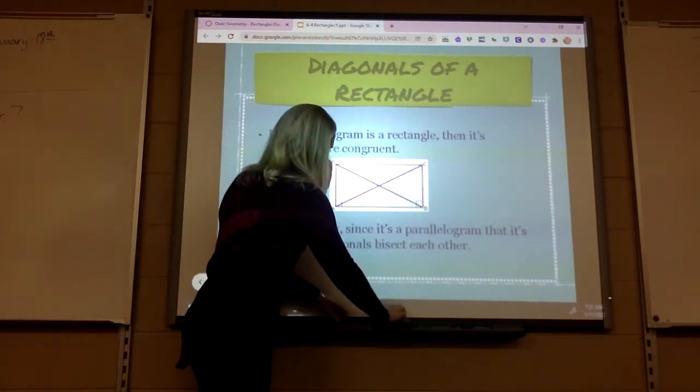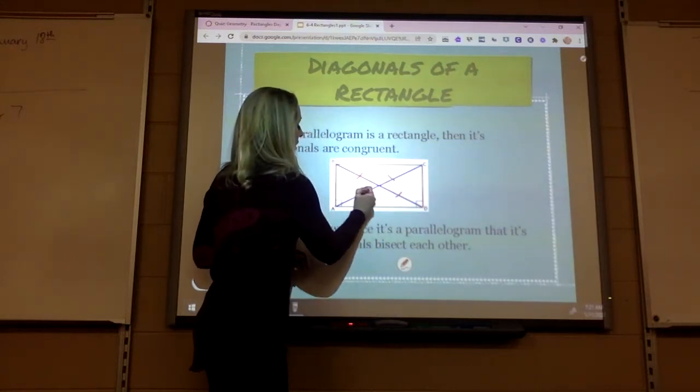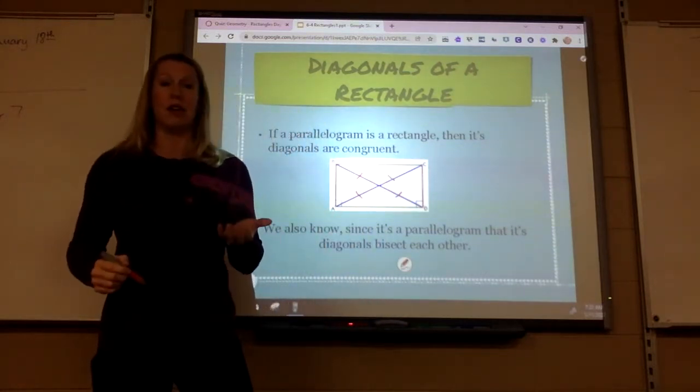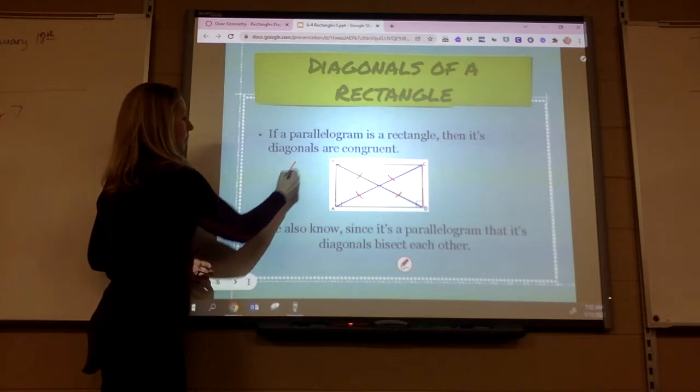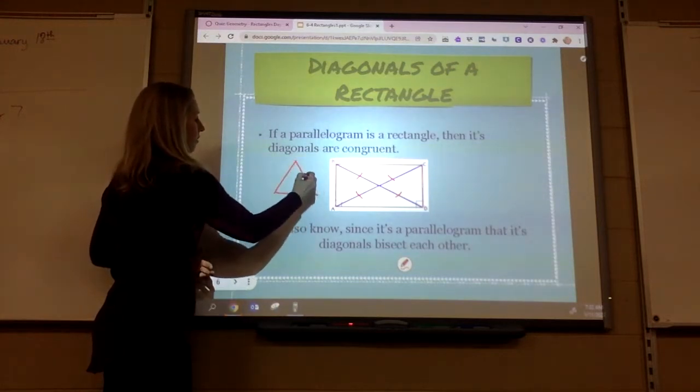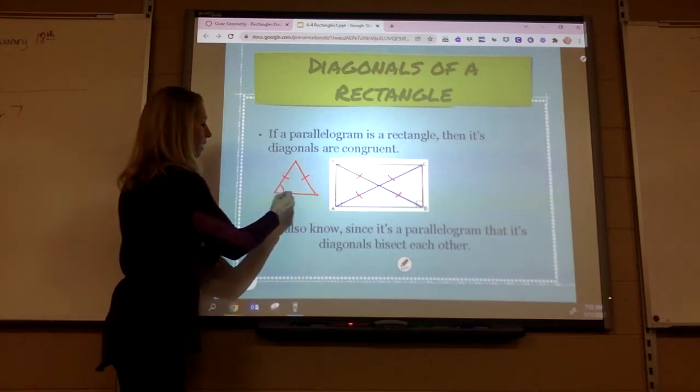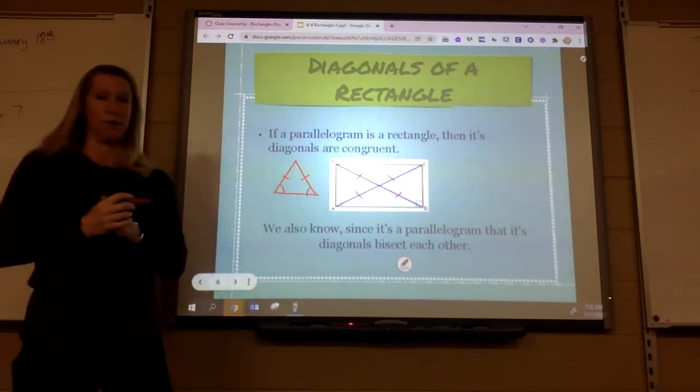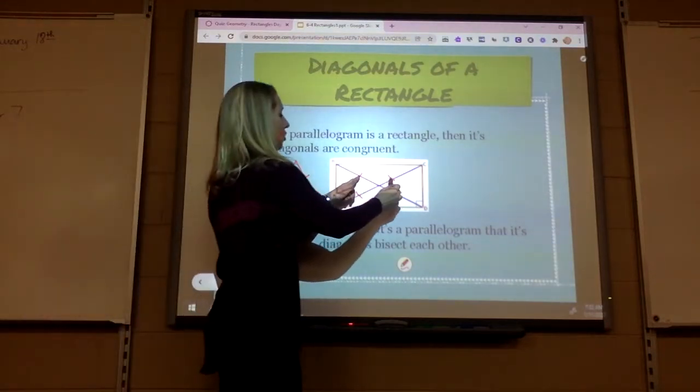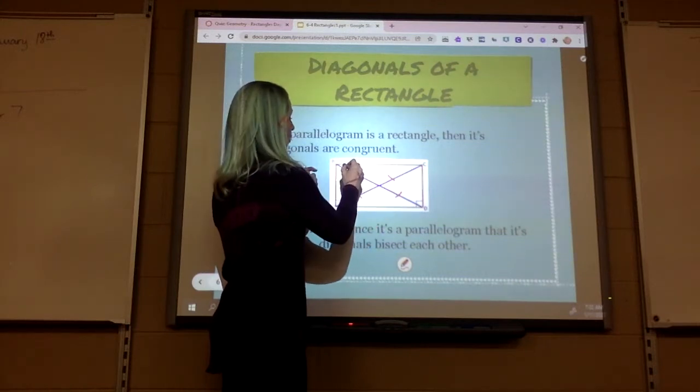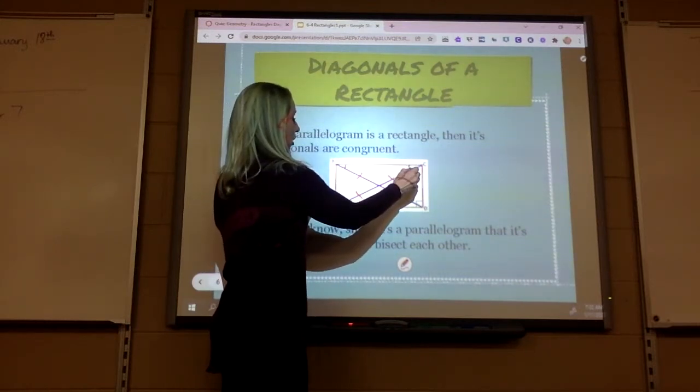But that also creates isosceles triangles. Now I don't know if you remember, but on an isosceles triangle, if two sides equal each other, then those two base angles equal each other. So if these two sides are equal, these two angles equal each other.